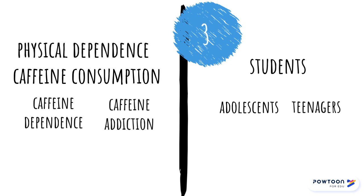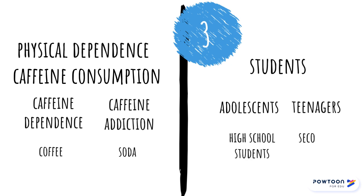The third way you can create more keywords is thinking of narrower terms. We might want to look only at coffee or soda, for example. We might also be interested in just high school students or secondary students.